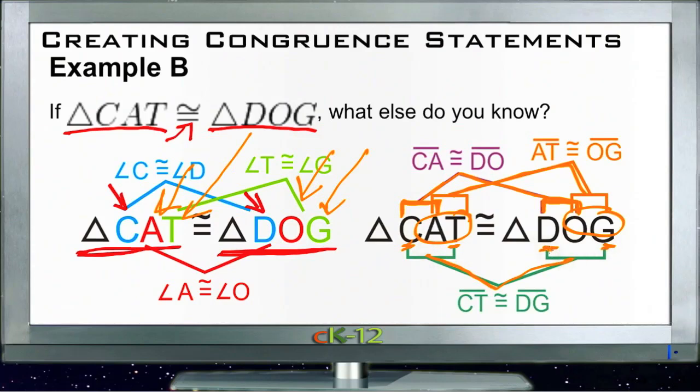And we can see that side AT corresponds to side OG and that side CT corresponds to side DG. So we actually have a lot of information just from this one little statement that CAT is congruent to DOG.